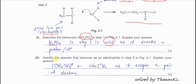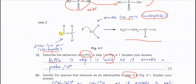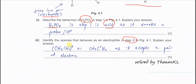Part two: identify the species that behaves as an electrophile in step 2. H2O is the lone pair donor, making it the nucleophile. The species that reacts with the nucleophile is the electrophile. The carbon cation — CH3CH2 positive — gains the lone pair from H2O, so it is the electrophile, because it accepts a pair of electrons from others.